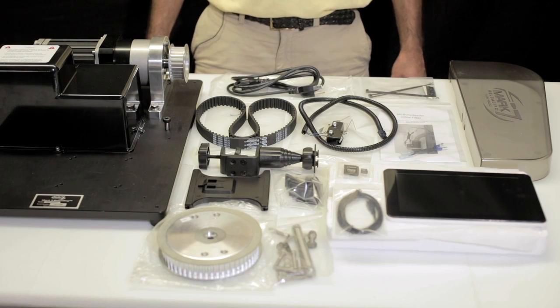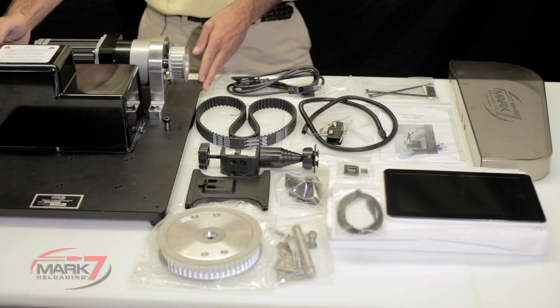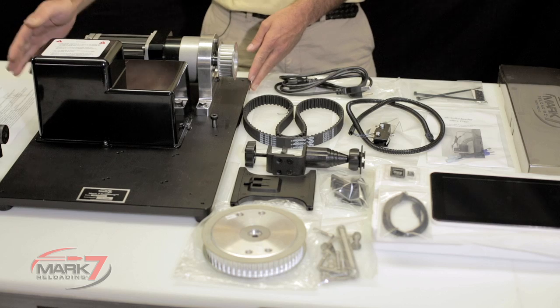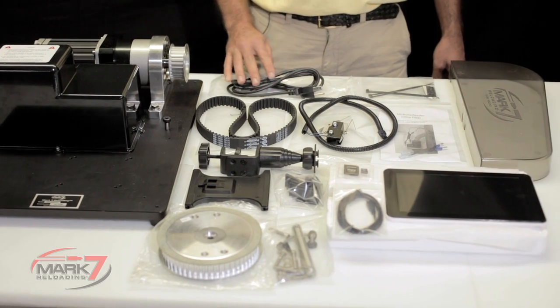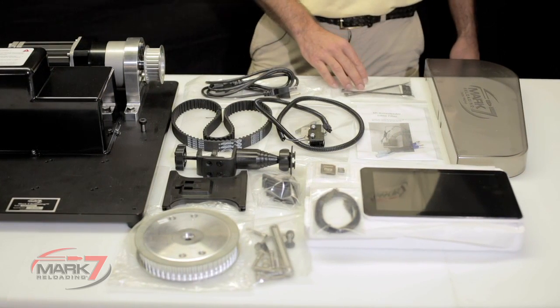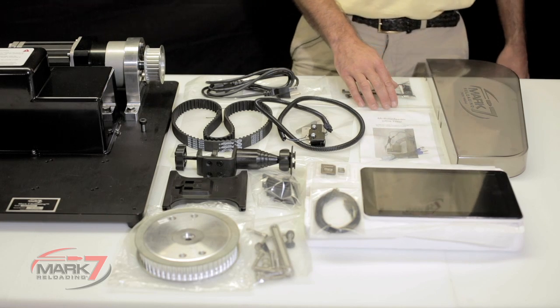What's included in the box when you unpack the Mark 7 Autodrive is the drive itself, the base plate assembly with the motor and electronics console, power cable for the unit, the belt, zip ties for cable management, and a filter for Mr. Bullet Feeder.